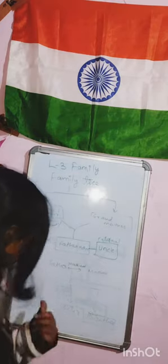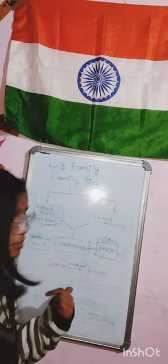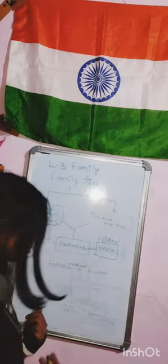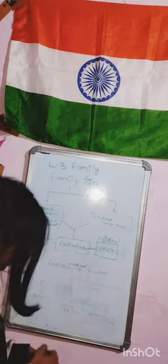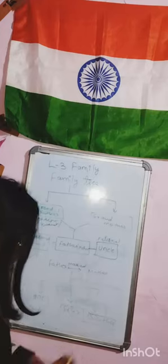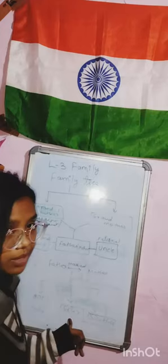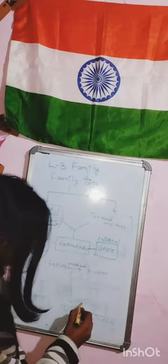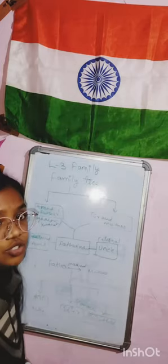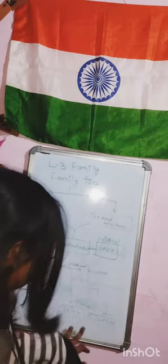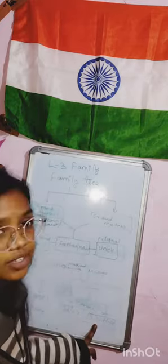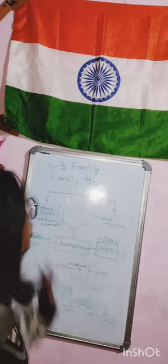After my mother and father's marriage, I was born. I will write my name here — my name is Neha. After me, my younger sister and younger brother were born, so I will write their names here as well. That is all about our family tree.